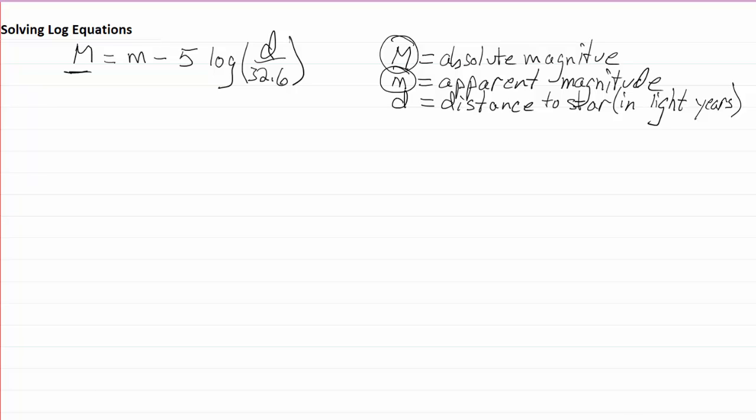I'll show you just one example of actually solving this for an absolute magnitude. Let's suppose a star has an apparent magnitude of 6.3 and this star happens to be 215 light years away. So its distance is 215, and I'm not writing down the units here. It'll just be a little easier to deal with if I don't do that.